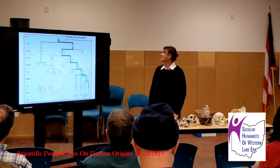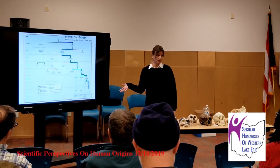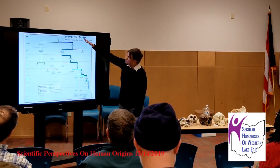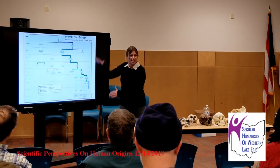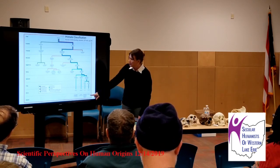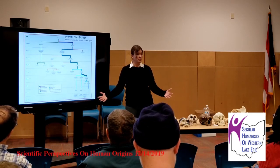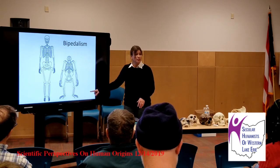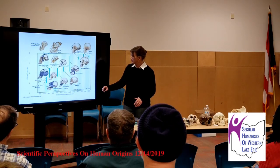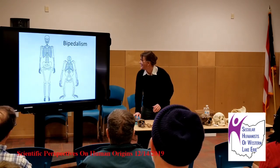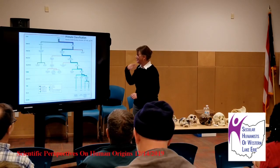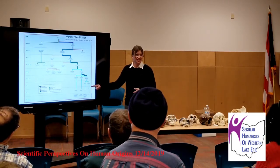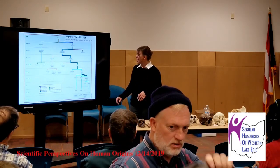Starting with a primate classification chart focused on living primates — from most inclusive to least inclusive in the hierarchy of taxonomic classification. At the species level, our species Homo sapiens is the only living member of our species. There are no subspecies today. We're also the only living member of our genus, and in fact the only living member of our tribe. That hasn't always been the case, as we'll discuss.